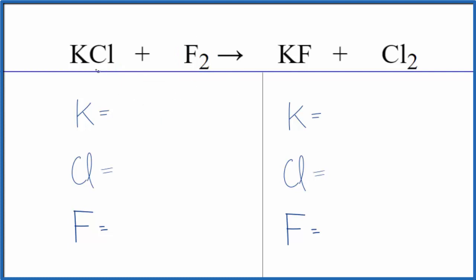Let's count the atoms up and balance the equation. One potassium, one chlorine, two fluorines. On the product side, we have one potassium, two chlorines, and just one fluorine.